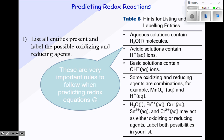Your first step is to list all entities present and label the possible oxidizing and reducing agents. Here are some hints. Anytime you see the word aqueous or the word solution, you have to know that water, liquid, is a reactant. Anytime you have an acid or you read the word acidic or acidified, you know that H+ (aq) ions are one of the reactants. Basic solutions have OH⁻, the hydroxide ion, as a reactant.